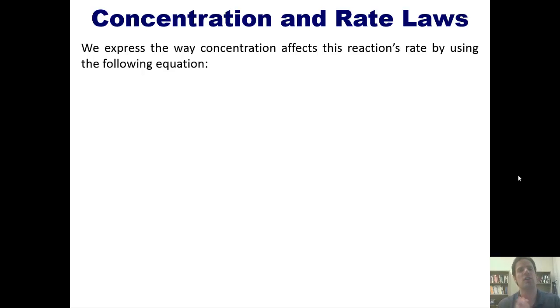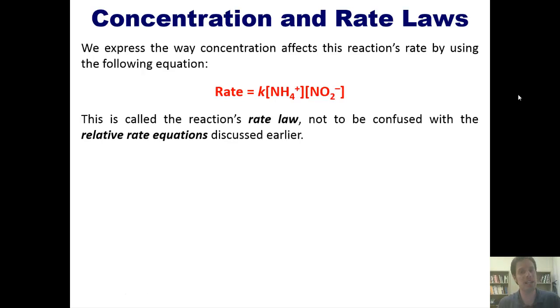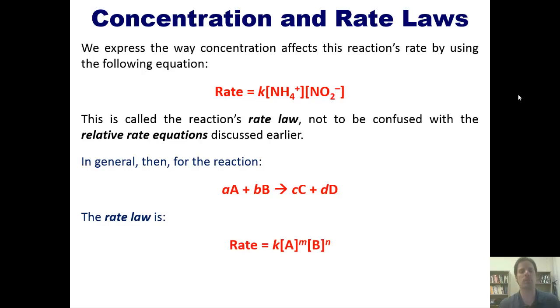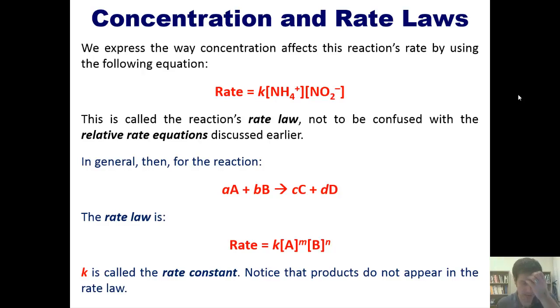We expressed the way concentration affects a reaction's rate or speed by using this equation. Rate equals K times the concentration of ammonium multiplied by the concentration of nitrogen dioxide. This is called this particular reaction's rate law, which is not to be confused with the relative rate equations that we discussed earlier. In general, for a reaction such as this generic one, the rate law will be equal to K multiplied by the individual concentrations of the reactants raised to some numbers M and N. K, by the way, is called the rate constant. Please notice that the products do not appear anywhere in the rate law. This is different from the relative rate equation we discussed earlier.